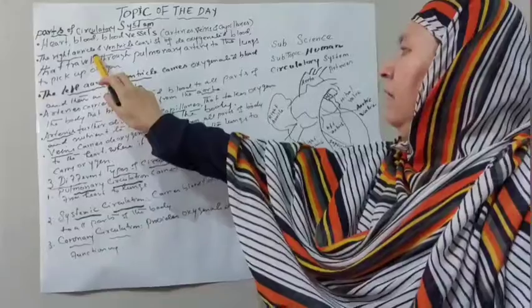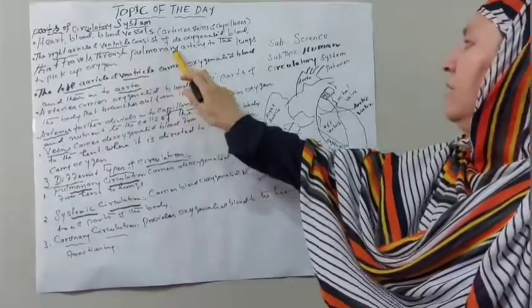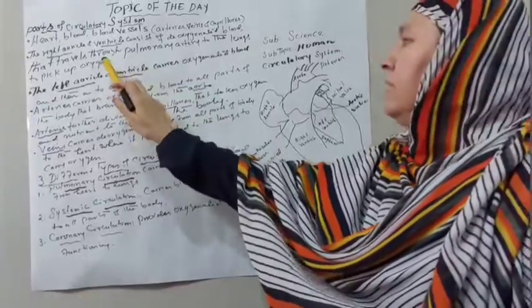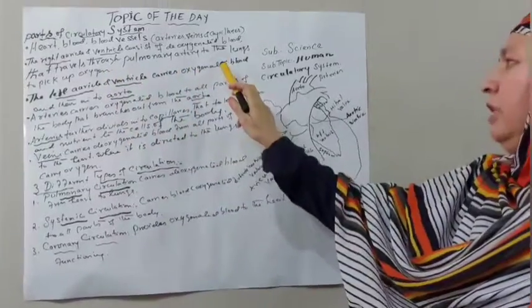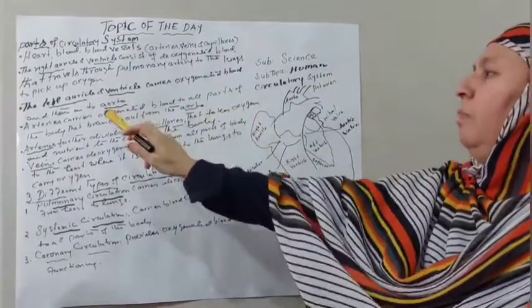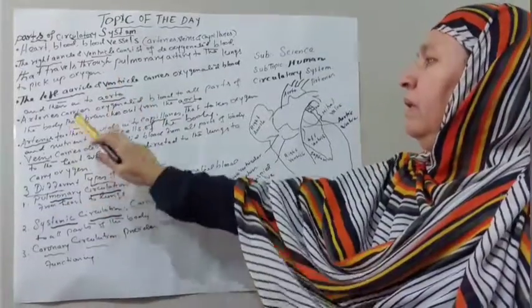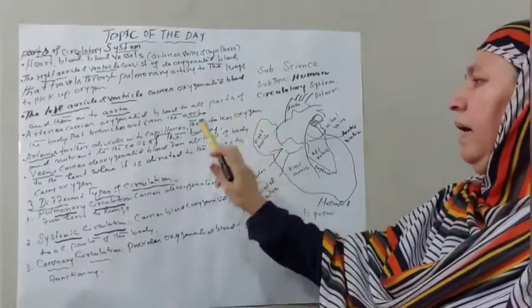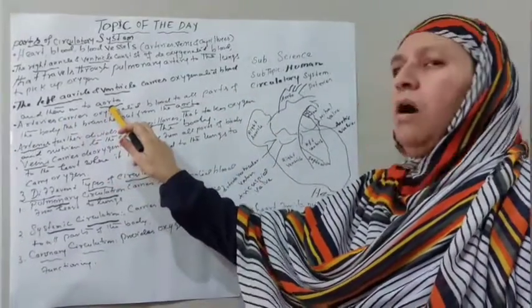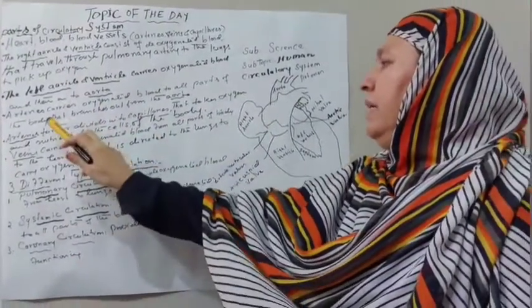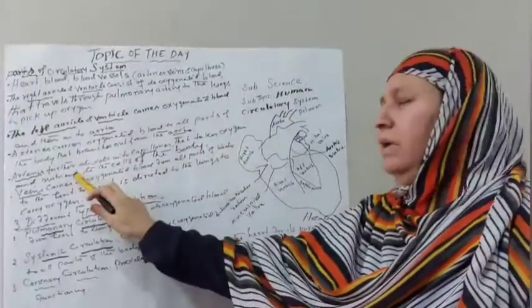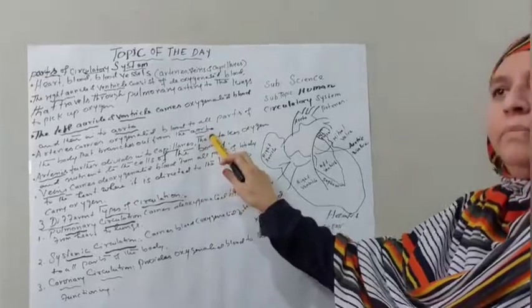The right auricle and ventricle consist of deoxygenated blood that travels through pulmonary artery to the lungs to pick up oxygen. The left auricle and ventricle carries oxygenated blood and then into aorta. Arteries carry oxygenated blood to all parts of the body that branches out from the aorta.